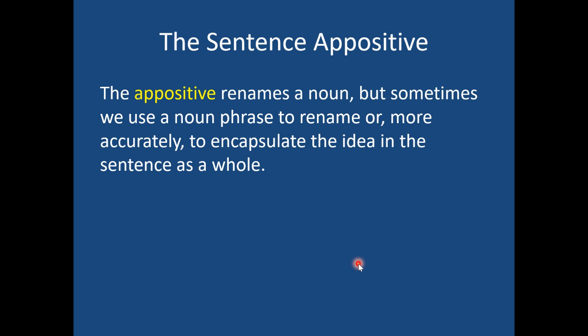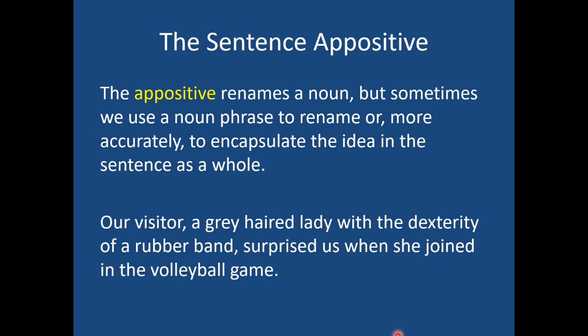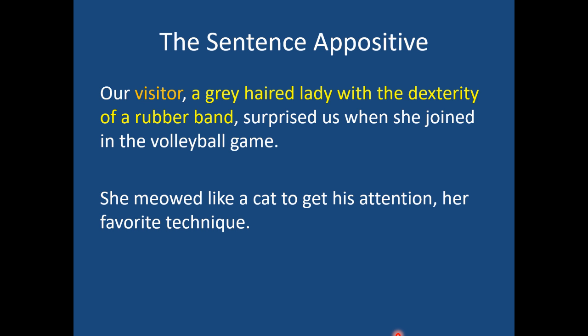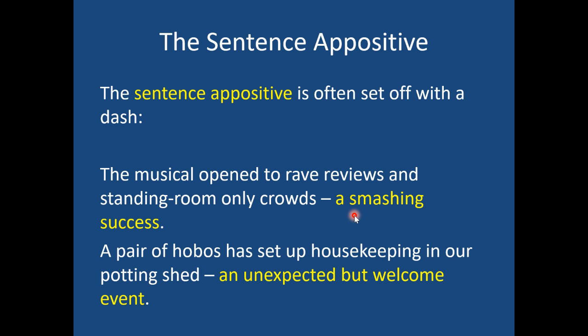The second structure we'll look at is the sentence appositive. We know that an appositive renames a noun, but sometimes we use a noun phrase to rename — or encapsulate — the idea of an entire sentence. For example, 'she meowed like a cat to get his attention — her favorite technique.' 'Her favorite technique' isn't renaming any single noun like 'cat' or 'attention.' The act of her meowing like a cat just to get his attention is her favorite technique. So the appositive is renaming an entire sentence. That's what we call a sentence appositive.